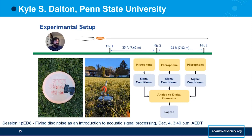Ultimately, I found that taping a small whistle to the top of the disc made it loud enough that I could put a little more airspace between it and the microphones. The whistle was also small enough that it didn't seem to noticeably impact the flight of the disc. These three microphones are each attached to their own signal conditioner, which provides power to the microphones and helps amplify the recorded signal. Then the signal goes to an analog to digital converter, which converts the recordings to a format that I can read, process, and store with my laptop.